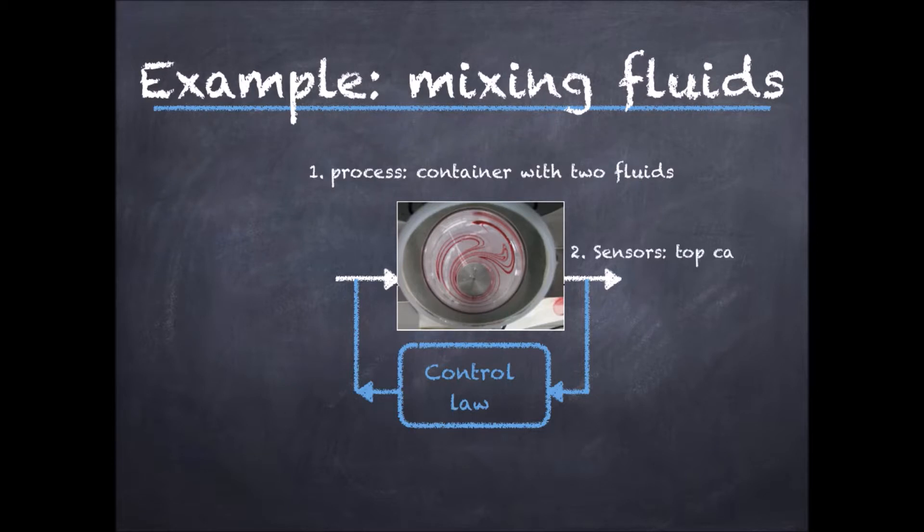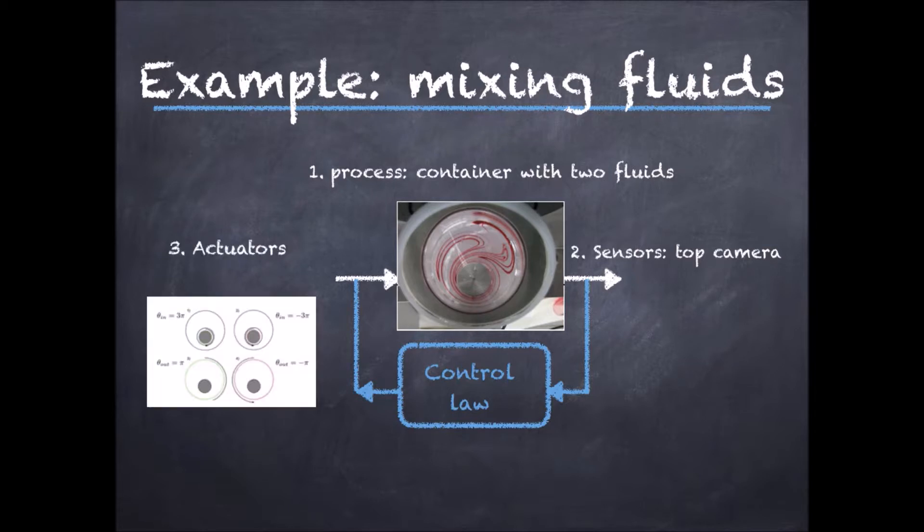The sensor is a top camera providing information on how well the two fluids are mixed and the actuation inputs that influence the system are moving an outer cylinder clockwise and or anti-clockwise and moving an inner cylinder clockwise or anti-clockwise. In between two sampling times there are then four options corresponding to the combinations of two options for each cylinder. The cost penalizes offsets from homogeneity and I will discuss it in more details shortly after introducing the model.